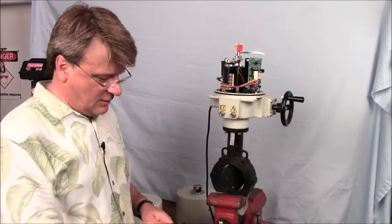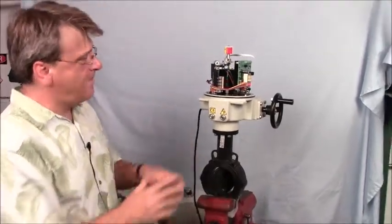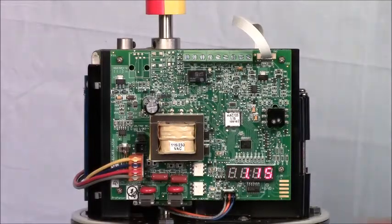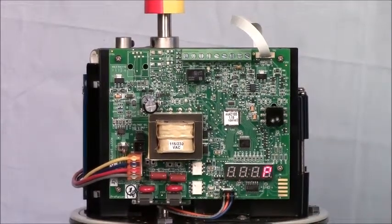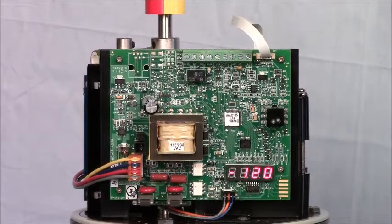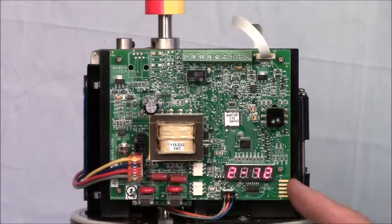Next, we put power onto the actuator, in this case plug it in. First thing that comes up is that we see the version of the software, in this case 1.15, and then the actuator that the software is running. In this case, it's a P2 at 120 volts.